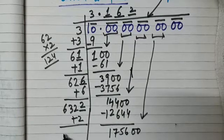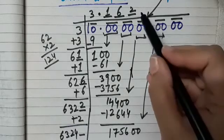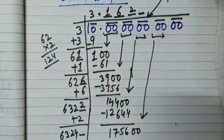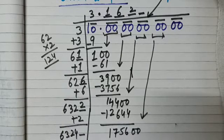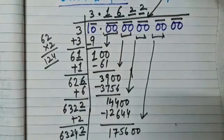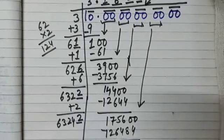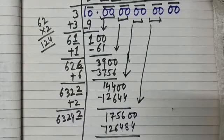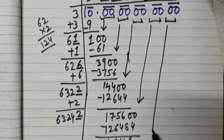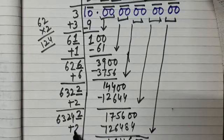Bring down the next period — a pair of zeros. What will be the divisor? It will be 6324 and a digit, which will be multiplied by the same digit we put in the quotient, with the product less than 175600. So 63242 × 2 = 126484. Subtract this from 175600 and we get 49116.